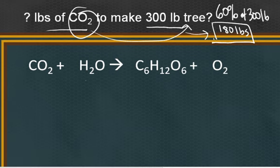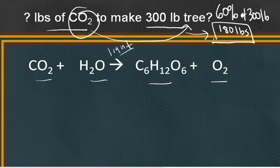Carbon dioxide reacts with water to form glucose and oxygen in the presence of light and the proper enzymes within the plant. Any time we describe a chemical change to answer a quantitative question, we have to make sure we're working with a balanced chemical equation. It's obvious right away that it's not balanced: there are six carbons, so we need six carbon dioxides; 12 hydrogens, so we need six water molecules; and we add a six in front of oxygen. The balanced equation is: 6CO₂ + 6H₂O → C₆H₁₂O₆ + 6O₂. Coefficient one is assumed in front of glucose.